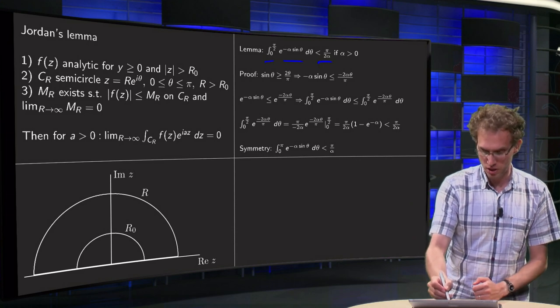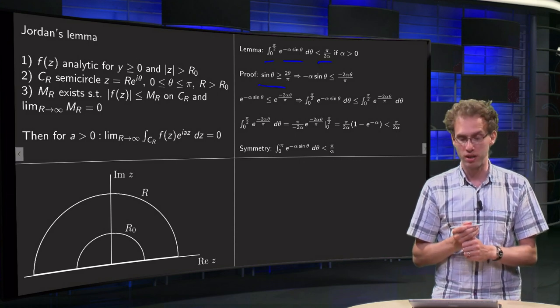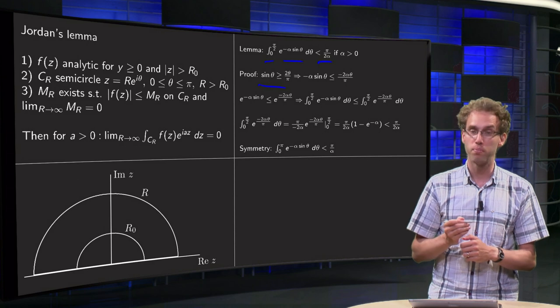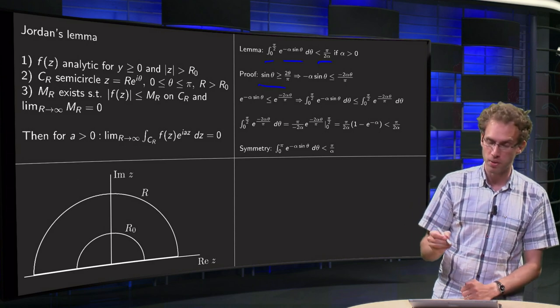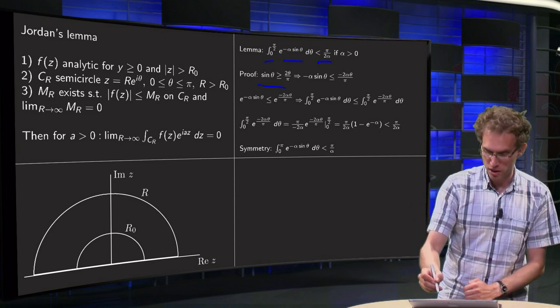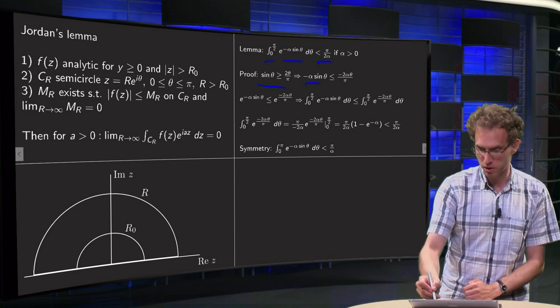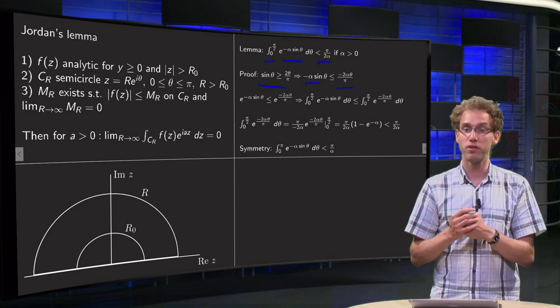Now why is that? Well, that's because sin θ is bigger or equal than 2 times θ over π, as we showed in the previous video. So, multiply with minus α. So, minus α sin θ is smaller or equal than minus 2α θ over π. Putting an exponent in changes the inequality.